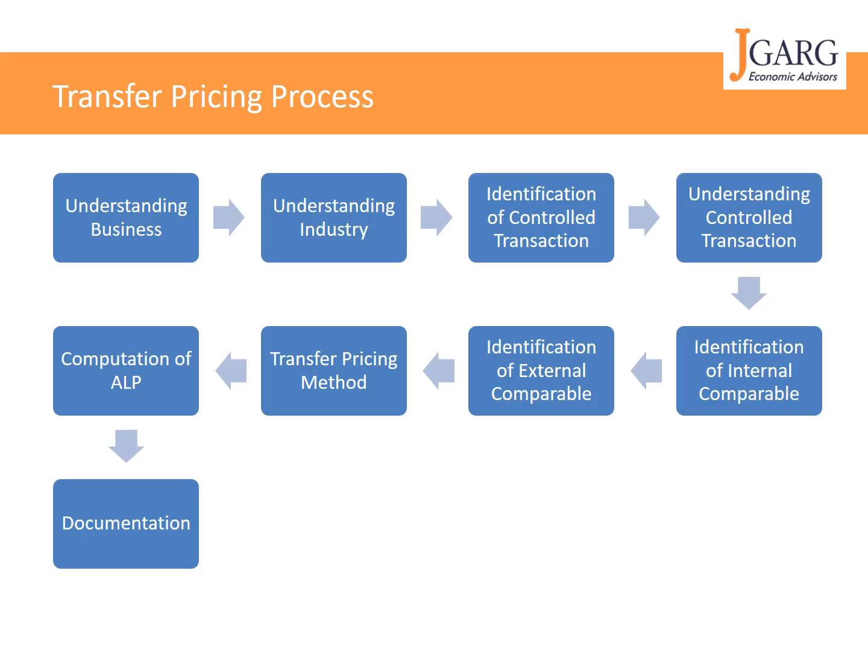The seventh step is identification of the method, or selecting the most appropriate — the best — transfer pricing method. There are five methods available, and some residual methods depending on the country, but broadly the five transfer pricing methods are: first, Comparable Uncontrolled Price (CUP) method; second, Resale Price method; third, Cost Plus method; fourth, Profit Split method; and fifth, Transactional Net Margin Method (TNMM). Out of these five, you select which method is most appropriate for your given circumstances. If you have three transactions, you may apply three different methods to justify each, and year to year you may also find different methods depending on data availability.